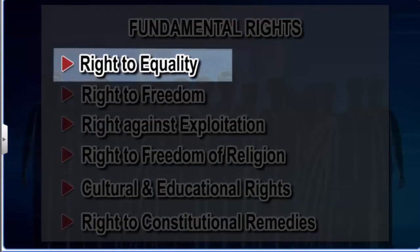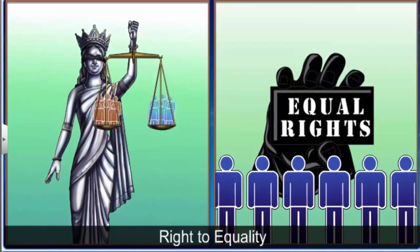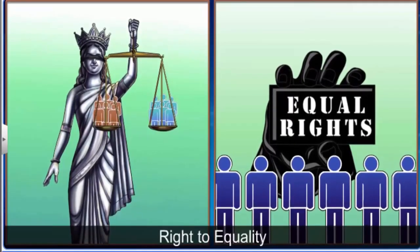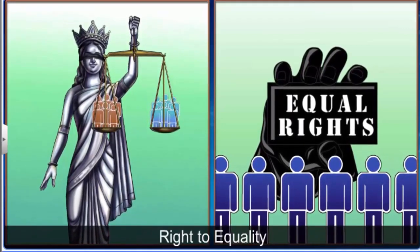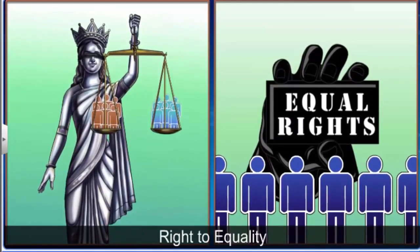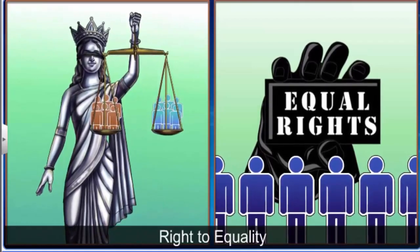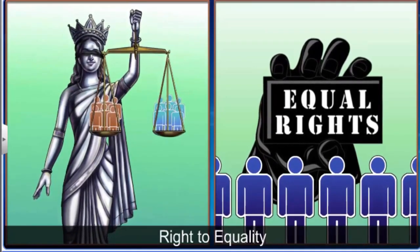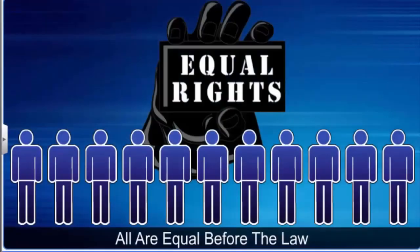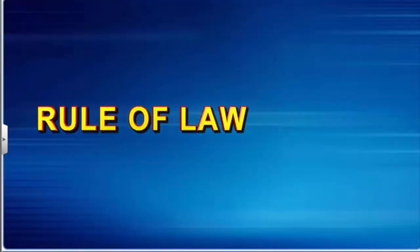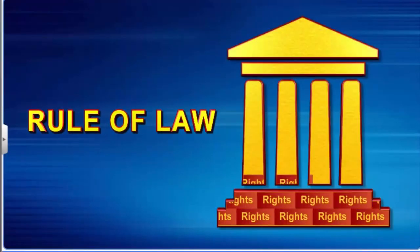Starting with the right to equality, let's take a close look at what each of them means. The right to equality states that the government shall not deny any citizen of India equality before the law or equal protection of the law. The law says that no distinction will be made between a political leader, a government official, and an ordinary citizen. This is called the rule of law and it forms the foundation of every democracy.